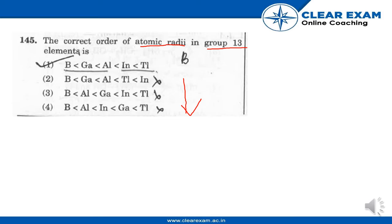However, the atomic radius of gallium is slightly lower than that of aluminium. This is due to the presence of d-electrons in gallium, which do not shield the nucleus effectively. As a result, the electrons of gallium experience a greater force of attraction by the nucleus than in aluminium, and hence the atomic radius of gallium is slightly less than that of aluminium.